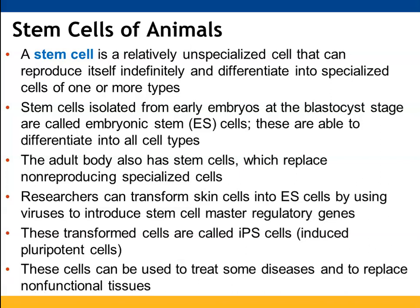Stem cells are typically unspecialized cells that can both reproduce themselves and differentiate into other cell types. Embryonic stem cells are isolated early in embryos at the blastocyst stage and can differentiate into all cell types found throughout an animal. Adults also have stem cells that replace specialized cells unable to reproduce. We can now take skin cells and use viruses to introduce genes that turn them from differentiated cells back into stem cells — these are known as iPS cells, or induced pluripotent stem cells.